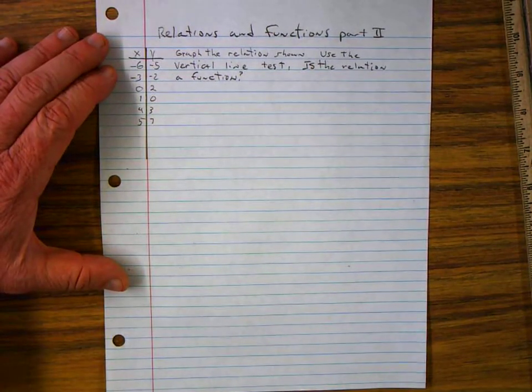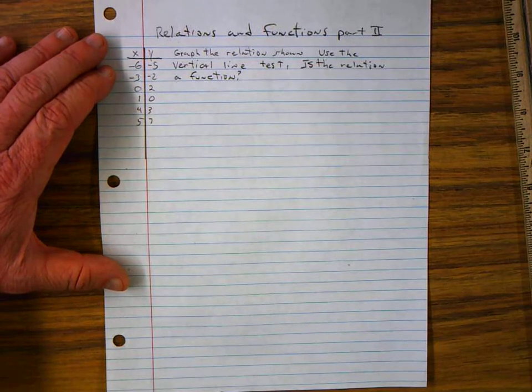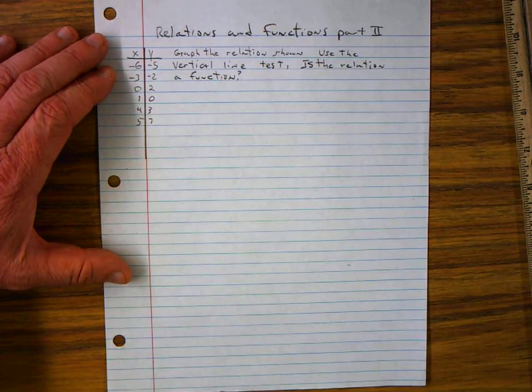Relations and Functions Part 2. Graph the relation shown. Use the vertical line test. Is the relation a function?